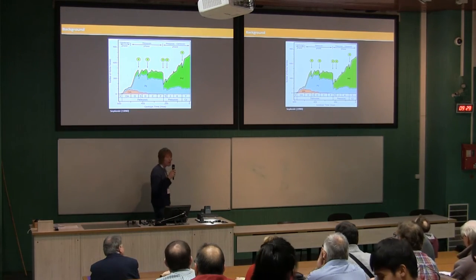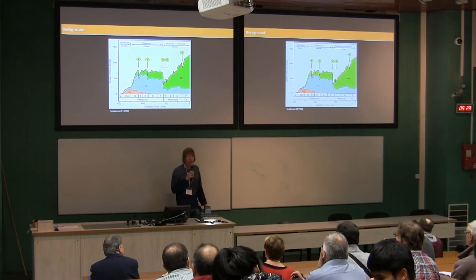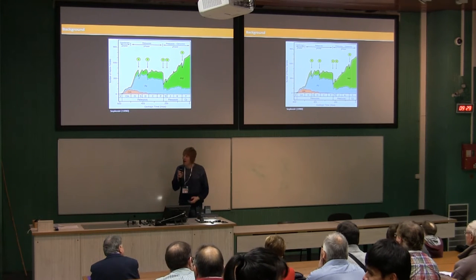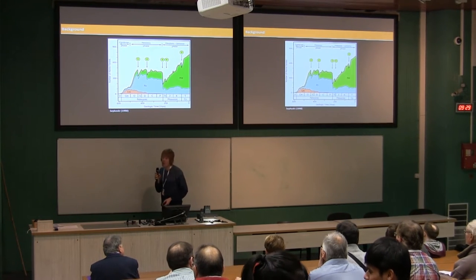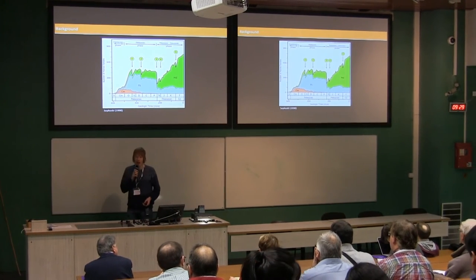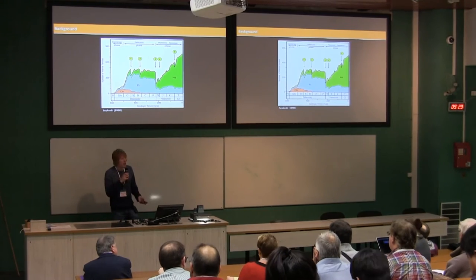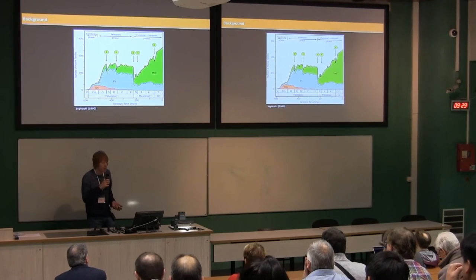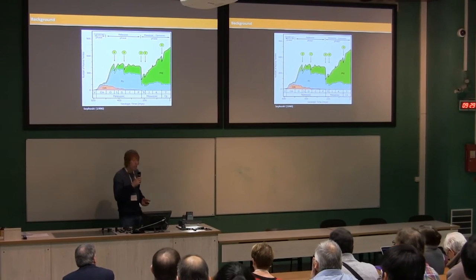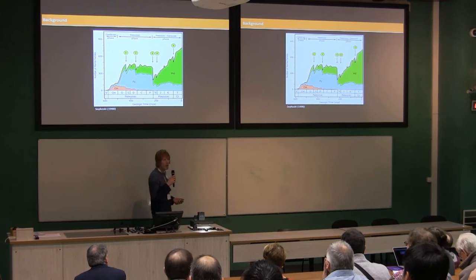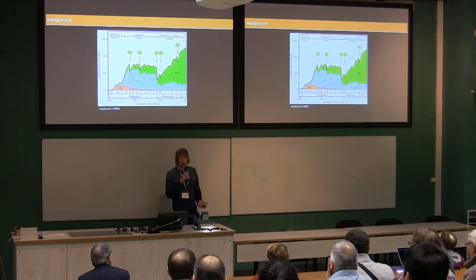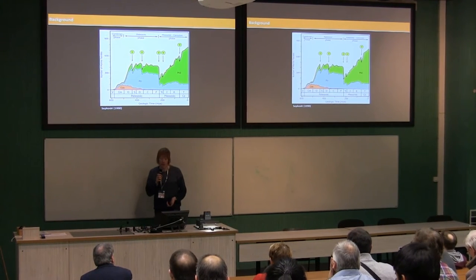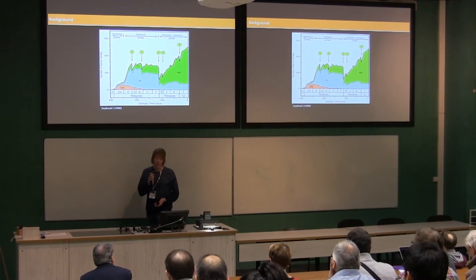We know that mass extinctions have had a profound influence on the evolution of life. They've done this through reducing diversity, through restructuring ecosystems, but also through fundamentally altering and reshaping the biogeographic distribution of organisms.